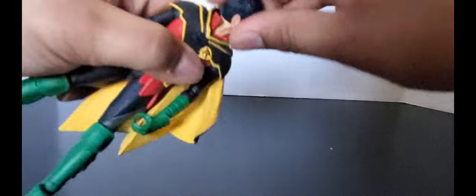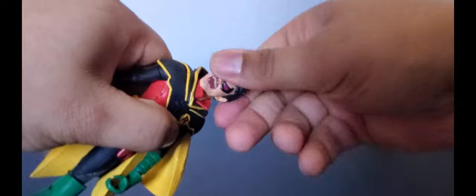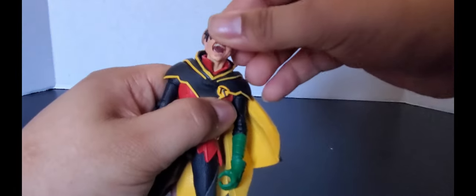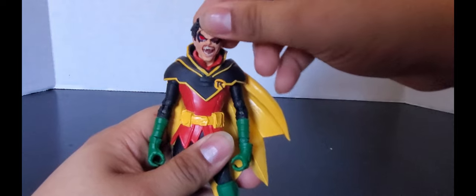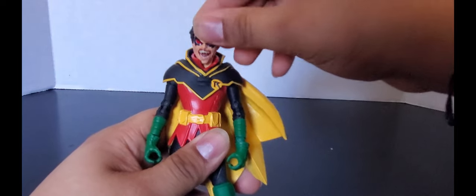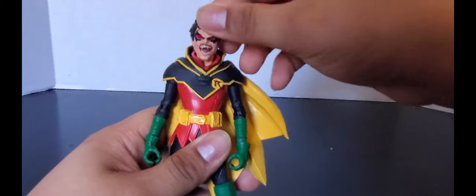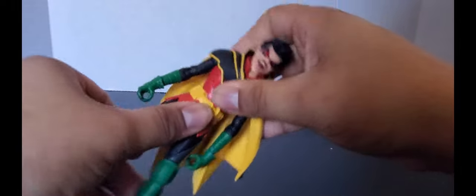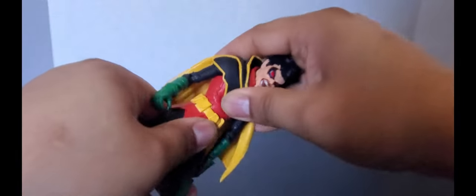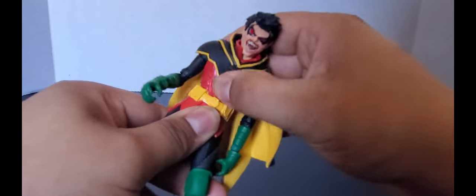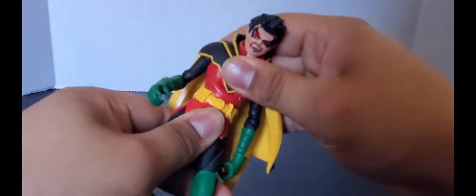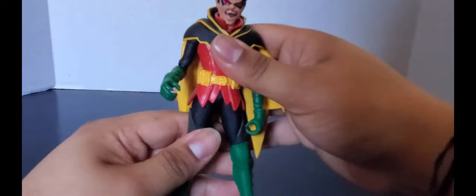Let's take a look at the articulation. The head can go all the way around, it can move up and down just a little bit, like he's nodding his head - yes, I'm going to suck your blood, I'm going to bite you. Ab crunch, kind of. Again with the plastic material for his costume, it kind of gets in a little bit. Swivel at the bicep, double joint elbows.